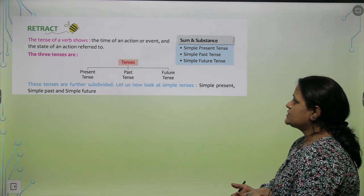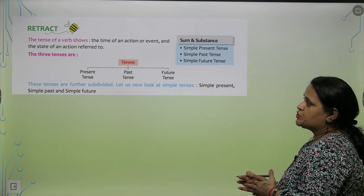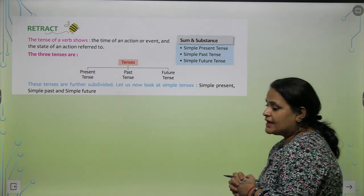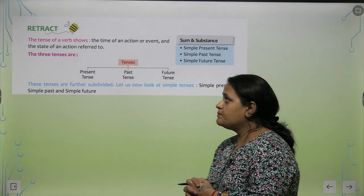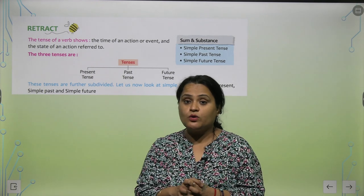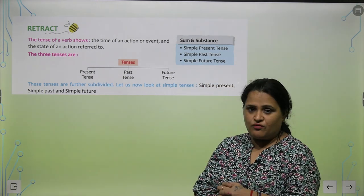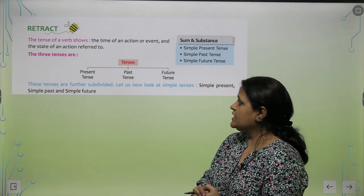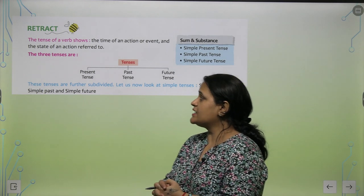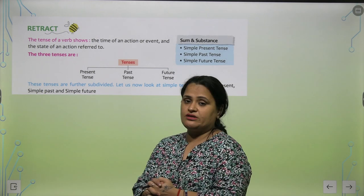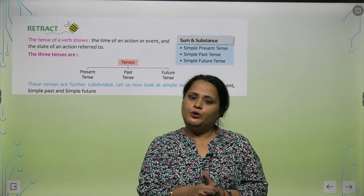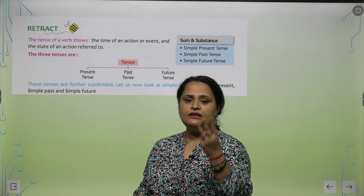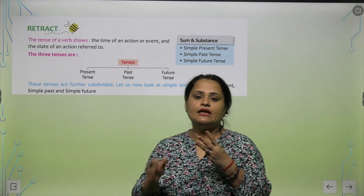The tenses of a verb show — kia dikhata hai? — ek verb jo tense mein hota hai — the time of an action or event, even the state of an action referred to. Tenses hum teen tarah se banaate hai.